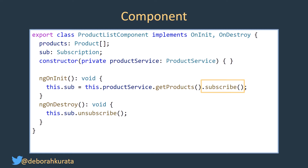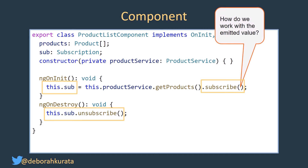We're calling our method and getting back a subscription. Where's our data? How do we work with that emitted value? Where is our array of products?